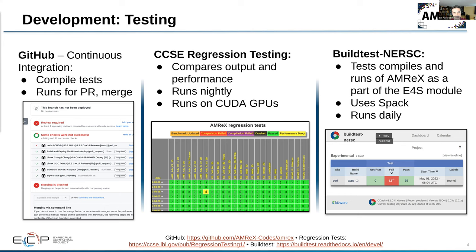We also have an in-house regression suite for nightly regression testing. These tests compare results and performance to benchmark data and send emails when performance is degraded or comparisons go outside data tolerances. Third, we provide testing scripts for Build-Test, a framework used by NERSC to test deployment of the E4S software stack as a module on its systems.